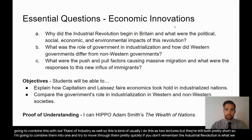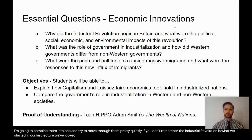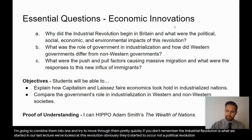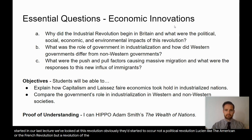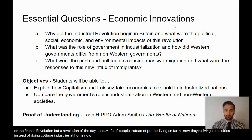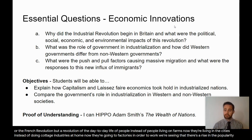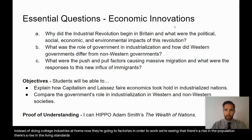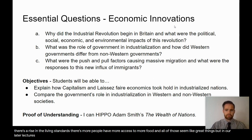The Industrial Revolution is what we started in our last lecture — not a political revolution like the American or the French Revolution, but a revolution of the day-to-day life of people. Instead of people living on farms, now they're living in cities. Instead of doing cottage industries at home, now they're going to factories. We're seeing a rise in population, a rise in living standards, and more people have access to more food. In later lectures, we'll look at some of the more negative impacts.